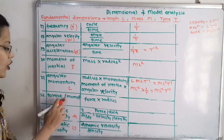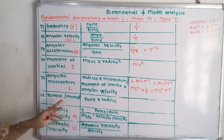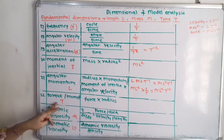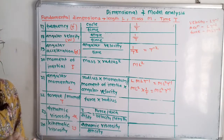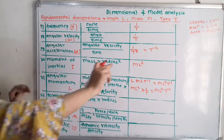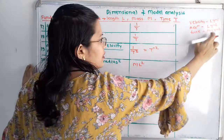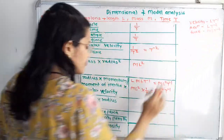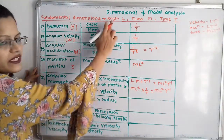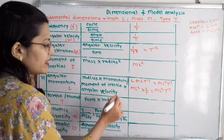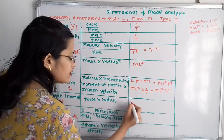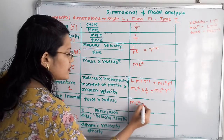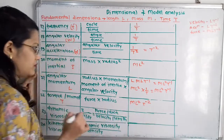Then torque or moment, notation capital T, equals force into radius. Force is M into L into T raised to minus 2, multiplied by radius as length L. So L multiplied by L gives L squared, and the dimension is ML squared T raised to minus 2.